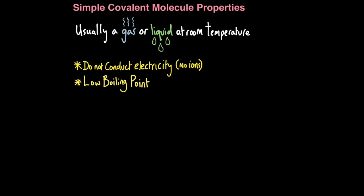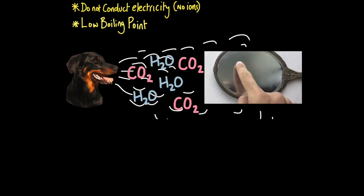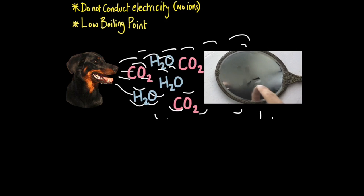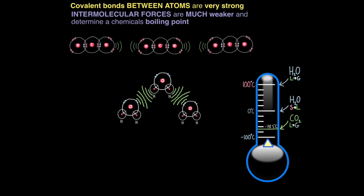Different covalent molecules have different boiling points. When a living organism breathes out they breathe out water vapour and carbon dioxide — if you blow onto a mirror you'd find condensation from the water vapour but not droplets of carbon dioxide. That's because water has a higher boiling point than carbon dioxide. The surface temperature of the mirror is cold enough to condense water back into a liquid, but not cold enough to condense carbon dioxide. Carbon dioxide has a much lower boiling point than water.